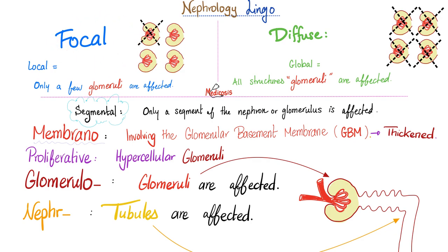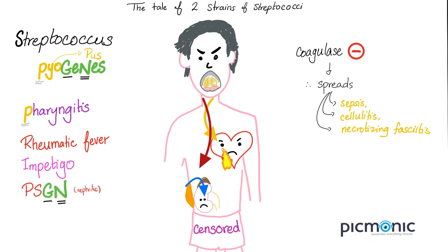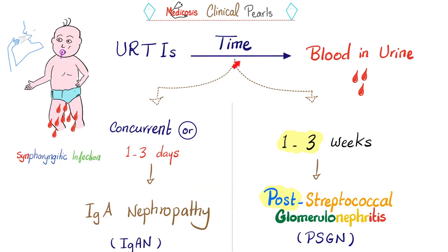IgA nephropathy is focal — some glomeruli are affected, some are not. You will also see hypercellularity under the microscope. In post-streptococcal GN, we have upper respiratory tract infection followed by kidney disease — very similar to IgA nephropathy, which also has upper respiratory tract infection followed by blood in the urine. But there is a very important difference: the time frame. In IgA nephropathy, the pharyngitis and hematuria are concurrent, or at most 1 to 2 days apart. That is also IgA nephropathy.